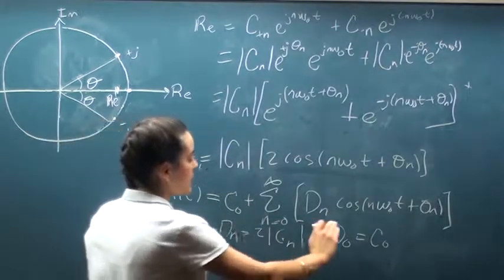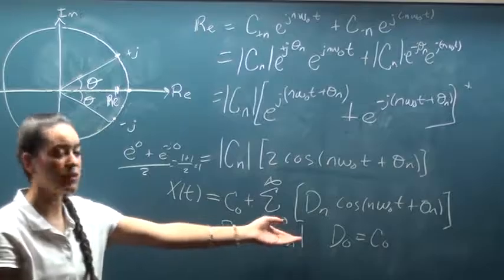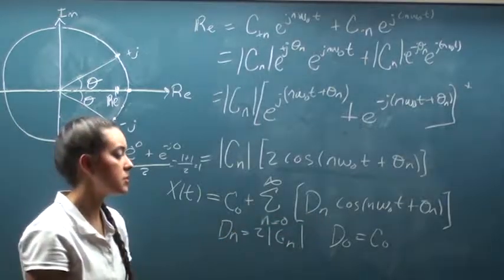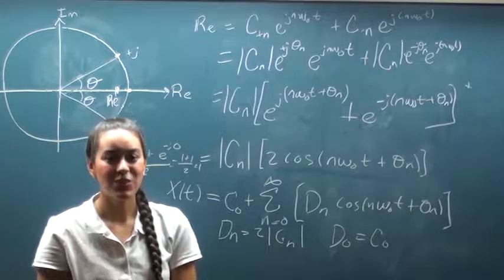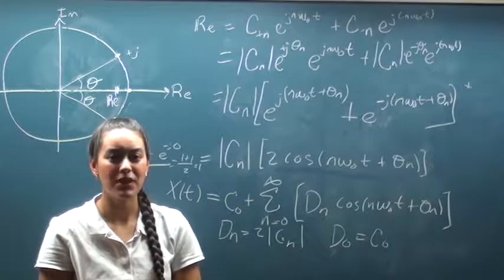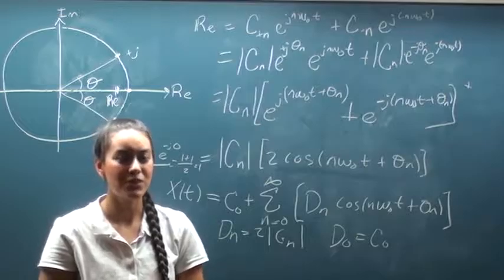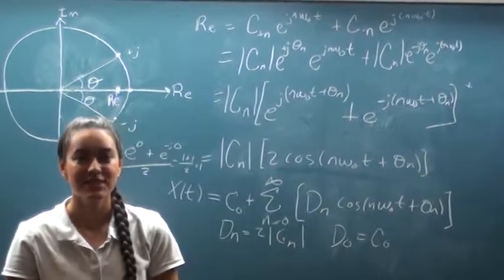And this right here is going to be the one last representation of the Fourier series in terms of a combined trigonometric function cosine. Thank you for watching. Please check out our website for more HKN videos. Hope this helps. Good luck. Thank you.